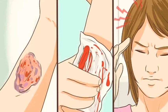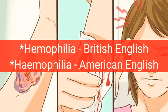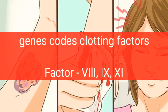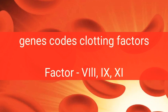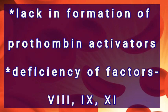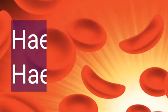Hemophilia is an inherited genetic condition, meaning it is passed down through families. It is caused by a defect in the gene that determines how the body makes clotting factors 8, 9, or 11. These genes are located on the X chromosome, making hemophilia an X-linked recessive disease. It is also caused by lack of formation of prothrombin activators and deficiency of factors 8, 9, and 11.